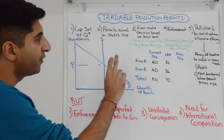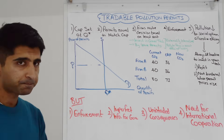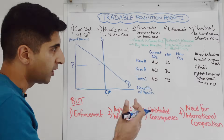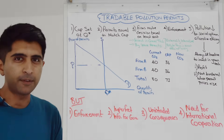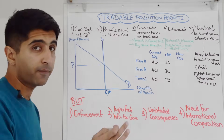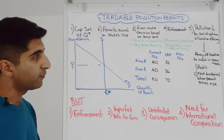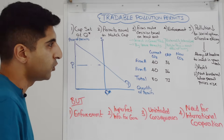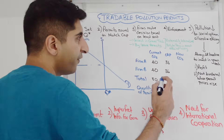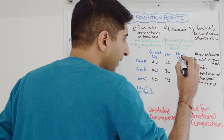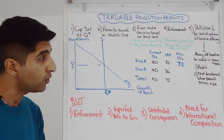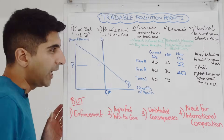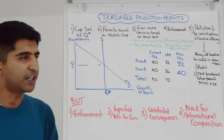Take an example of two firms — Firm A and Firm B. Both firms are currently emitting 40 tons of CO2, giving a total of 80. The scheme is introduced and the cap is set at 72, with each firm receiving 36 permits — they're allowed to emit 36 tons of CO2 each. In response, Firm A brings down CO2 emissions to 32, while Firm B continues emitting at 40.